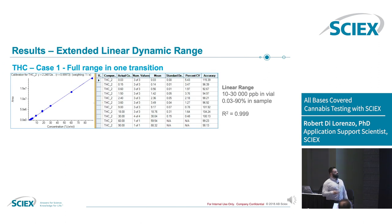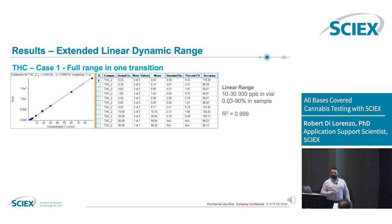For THC, in the vial 10 to 30,000 ppb — which after our dilution calculates to 0.3 to 90% of the sample — with 0.999 R² throughout the entire range. That's the easy case: one MRM transition does the whole range.